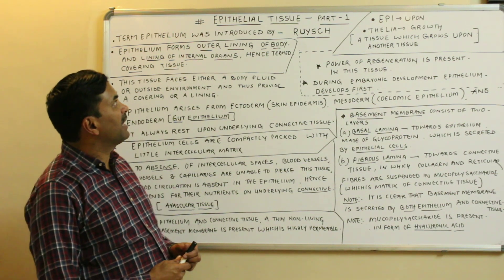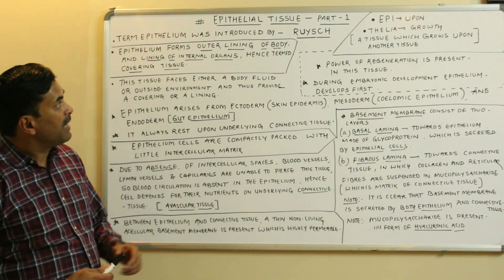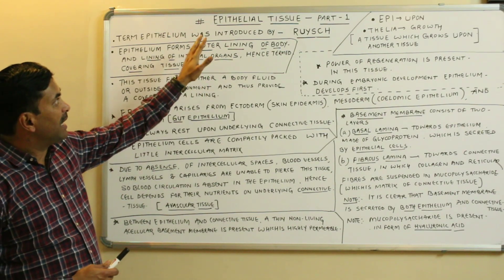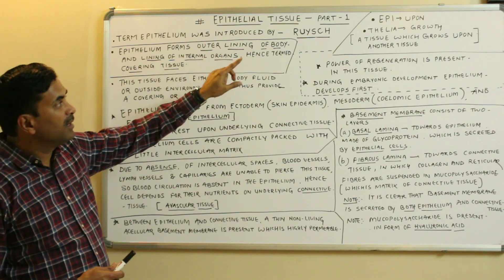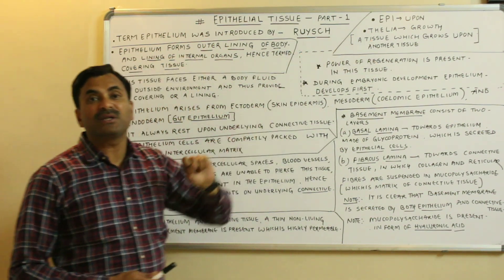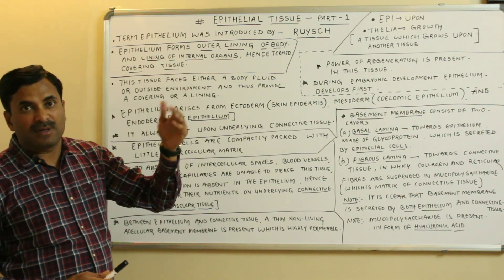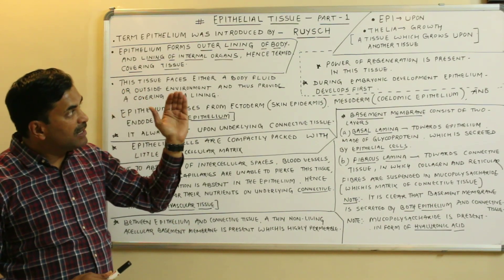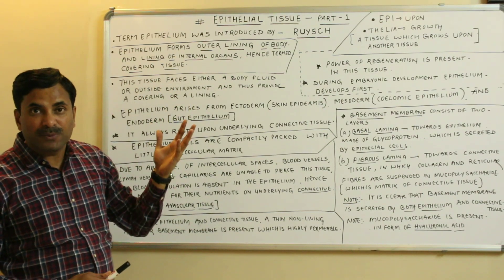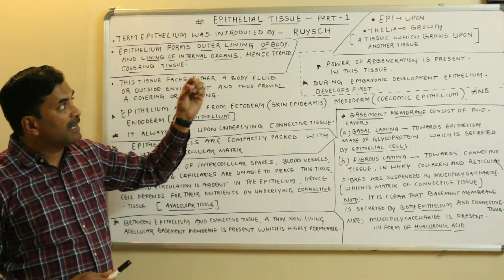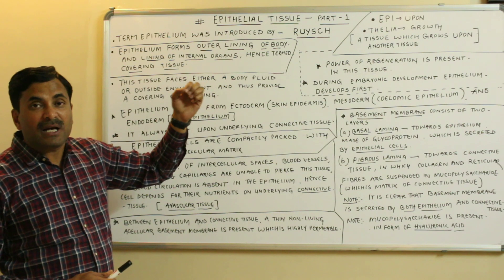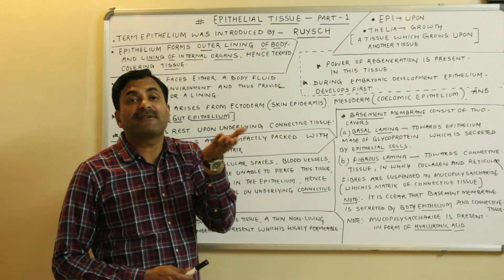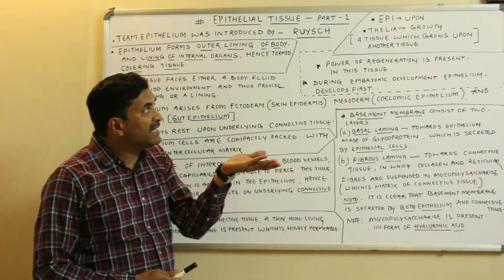Today we will discuss epithelial tissue. The word 'epithelial' is composed of two words: 'epi' meaning 'upon' and 'thilia' meaning 'growth.' So epithelial tissue grows upon another tissue — that is why it is called epithelial. In a couple of minutes you will see that epithelial tissue grows upon connective tissue.